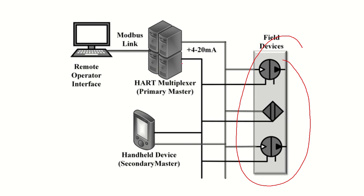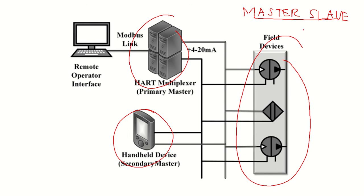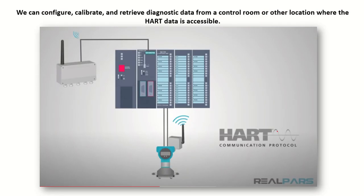In a typical HART architecture, a good number of field devices are connected via the 4 to 20 milliampere current loop. An important advantage of HART protocol is that it follows a master-slave architecture. Furthermore, HART can receive input from multiple masters. You can configure, calibrate, and access all diagnostic data from the control room or from any other location where HART data is accessible.